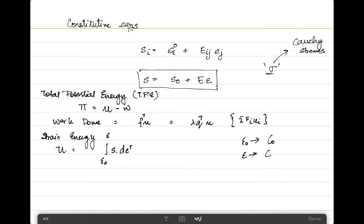Of course, this epsilon naught refers to the strain at the reference configuration and epsilon refers to the strain in the current configuration. The stress comes from this equation right here, and we can write this as S naught epsilon plus E epsilon times epsilon after it has been integrated with limits of epsilon naught to epsilon.